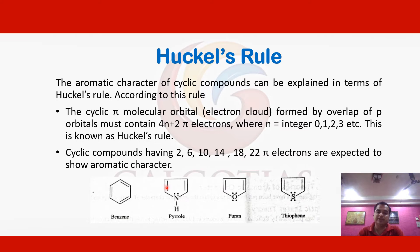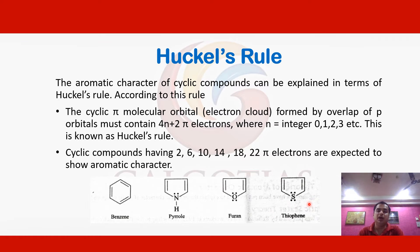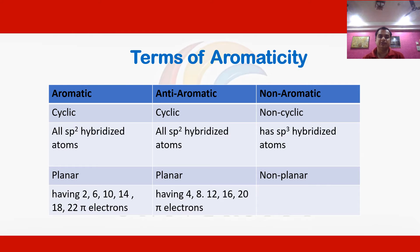Similarly, in pyrrole there are also six pi electrons in the cyclic ring, making it aromatic. Pyrrole has two pi bonds giving four pi electrons, plus the lone pair on nitrogen also participates in the pi electron cloud above and below the ring. That is why pyrrole follows Hückel's rule. Similarly, furan and thiophene ring structures also follow Hückel's rule.